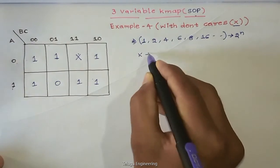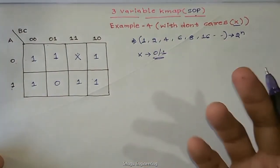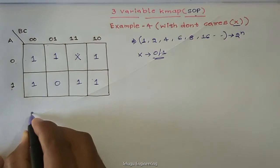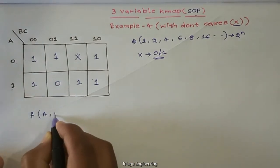Don't care, it is either 0 or 1. If we count the number of 1s, that is the output function. So, the final function is f of A, B, C.